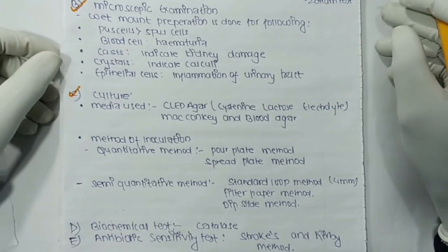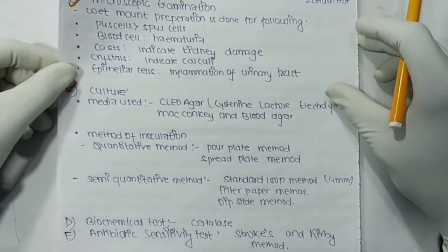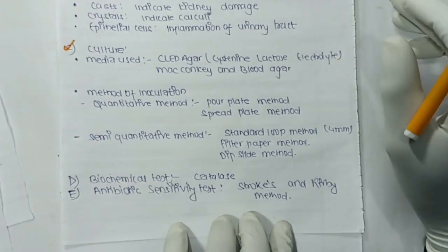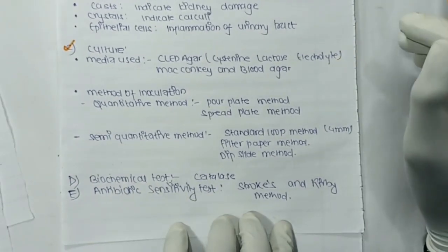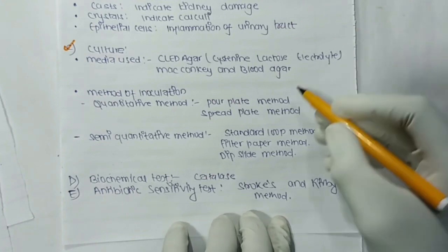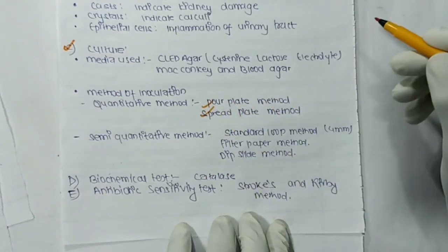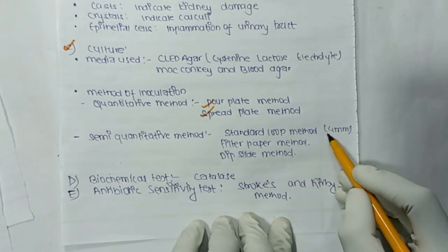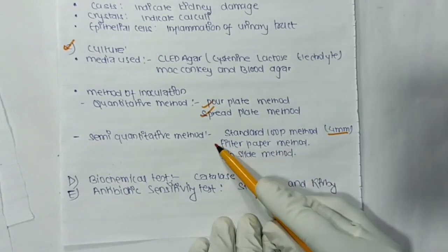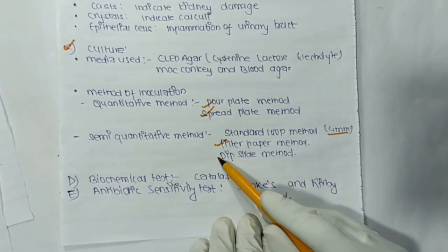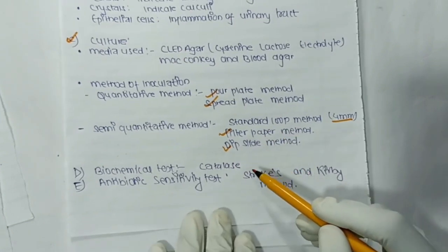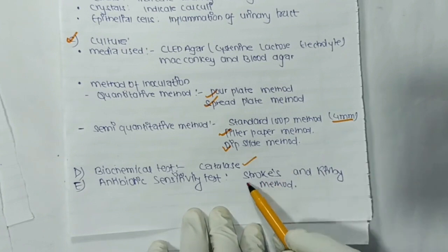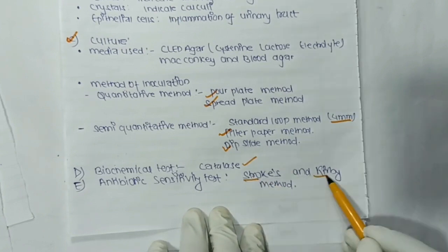Culture media used are CLED (cystine lactose electrolyte-deficient) agar, MacConkey agar, and blood agar. For inoculation, the quantitative methods include the pour plate method and the spread method. Semi-quantitative methods include the standard loop method, the filter paper method, and the dip slide method. Other tests include the catalase test, and lastly the antibiotic sensitivity test using the Stokes and Kirby-Bauer method.